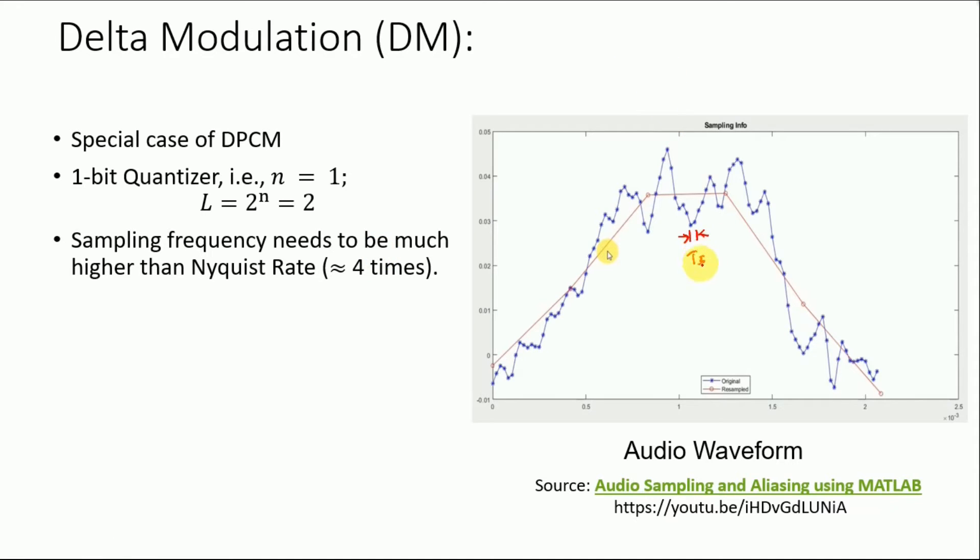So say 0.5 and minus 0.5, so anything above this value would be approximated to 0.5 and anything below 0 would be approximated to minus 0.5. So since there are only two levels, it would be much better if the correlation is higher. So by that what I mean is that if we make the sampling time period Ts very small, hence we can make use of one bit quantizer.